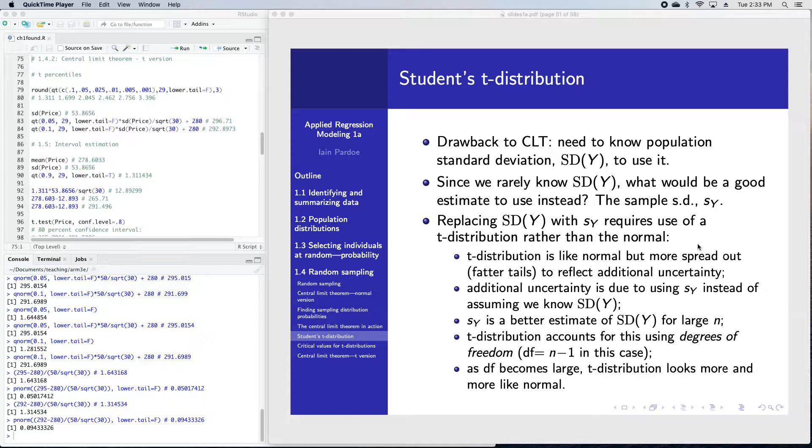The reason that it has fatter tails is because by introducing the sample standard deviation as an estimate of the population standard deviation, we're adding additional uncertainty to the procedure. To reflect that additional uncertainty, we have to make the distribution a little bit wider.